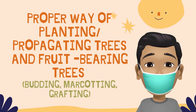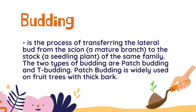Now that we know trees appropriate for orchard gardening based on location, climate, and market demands, we will proceed to the proper ways of planting and propagating trees and fruit bearing trees. First is budding. It is the process of transferring the lateral bud from the scion — a mature branch — to the stock, a seedling plant of the same family. The two types of budding are patch budding and top budding. Patch budding is widely used on fruit trees with thick bark.